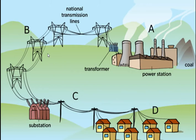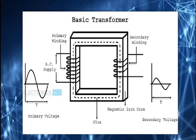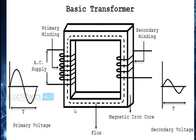High voltage transmission is much more economical because the losses are reduced by increasing the voltage level. At the end user site, you will get a step-down transformer, which is used to reduce or step down the voltage. The reason behind using AC supply is that AC voltage can be easily transformed to higher or lower voltage levels by using a transformer.